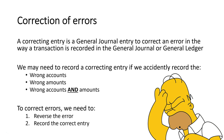So what is a correcting entry? A correcting entry is done in the General Journal to correct an error in the way a transaction was recorded in the General Journal or the General Ledger. The kinds of mistakes we commonly see are using the wrong account, putting the wrong amount in originally, or doing both — using the wrong account and the wrong amount.